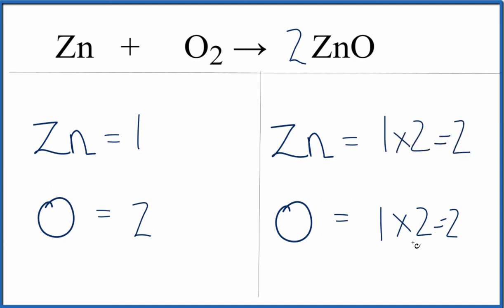So we fix the oxygens, but the zincs aren't balanced. Come over here on the reactant side to get two zincs to balance these two out. We can just put a coefficient of two in front of the Zn. So our one zinc times the two, that gives us two zinc atoms.